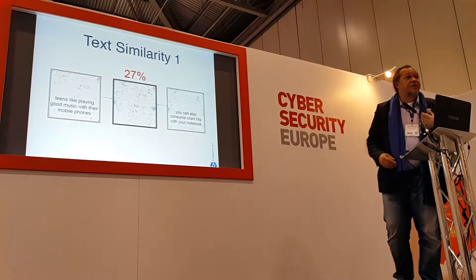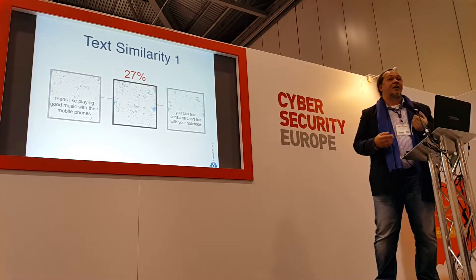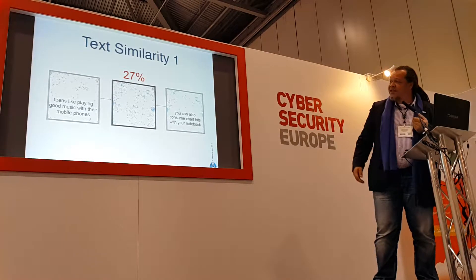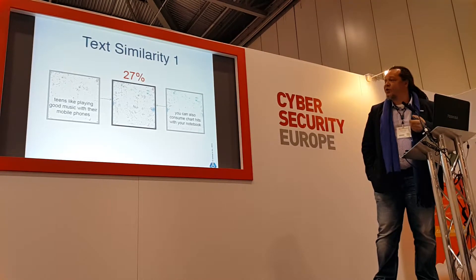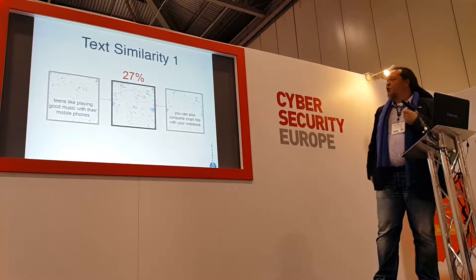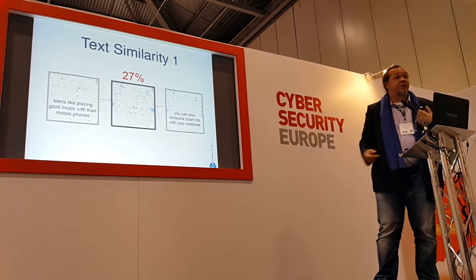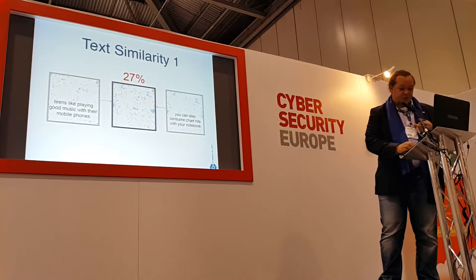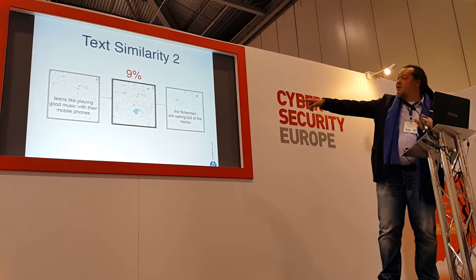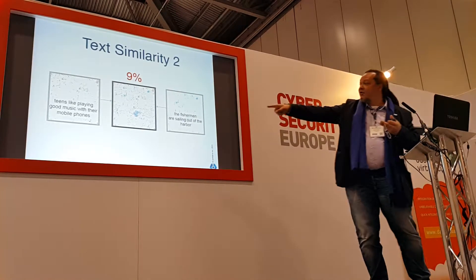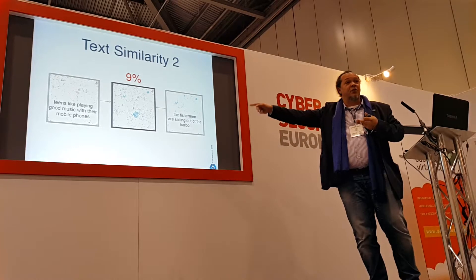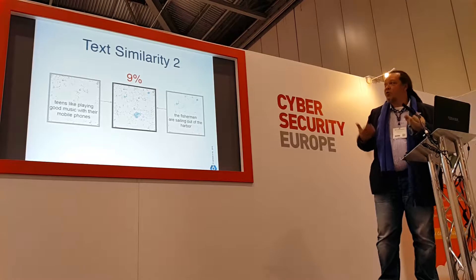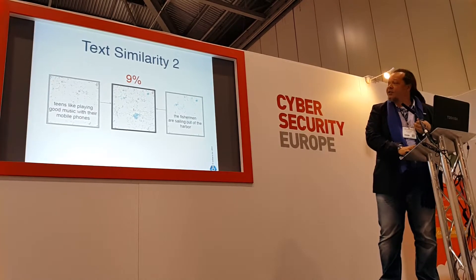The resulting text fingerprint behaves exactly like word fingerprints, so I can compare them. Here we have a sentence about teens playing good music with their mobile phones, and another about consuming chart hits with your notebook — there is a semantic overlap of 27%. If you change the second sentence to something completely different, you can even see in the overlay that most of the dots do not really overlap, and you end up with only 9%.